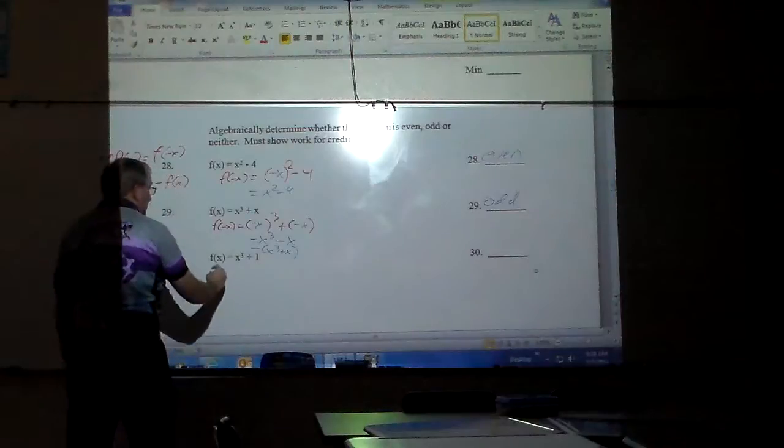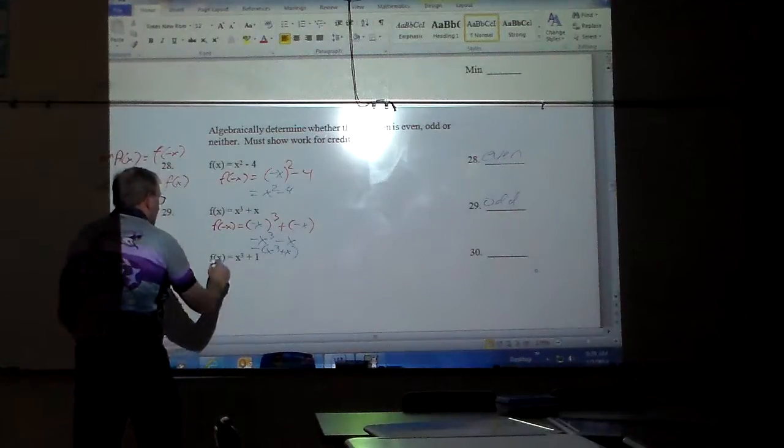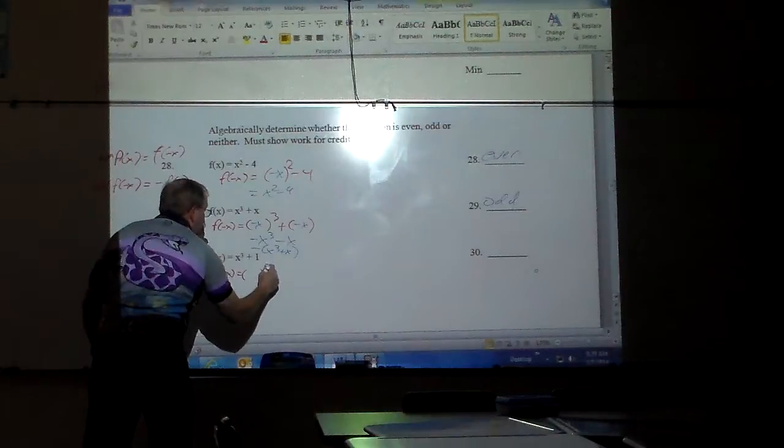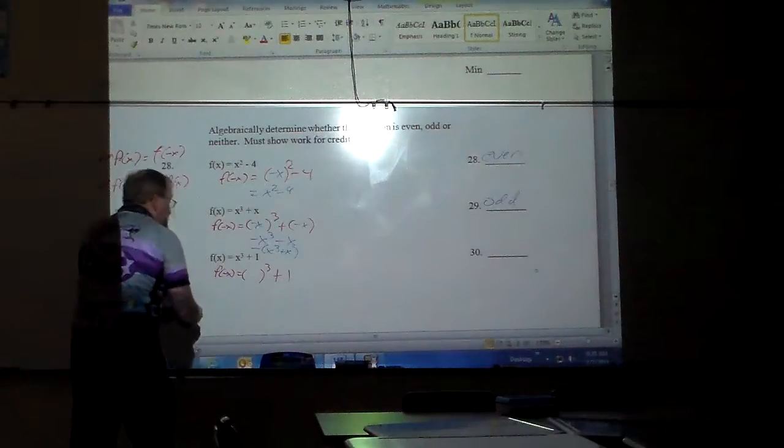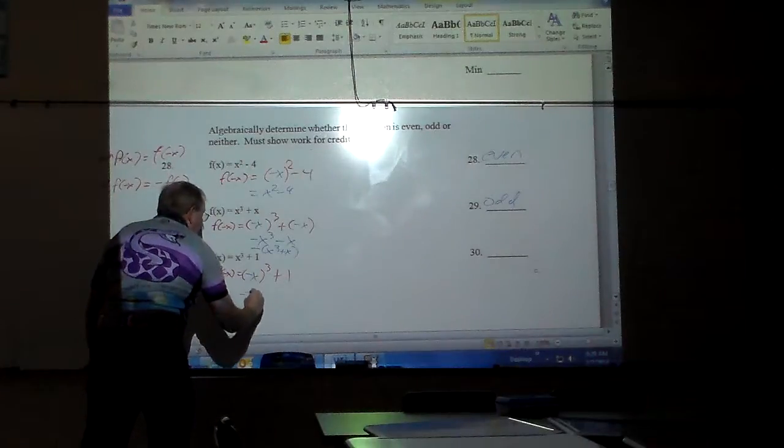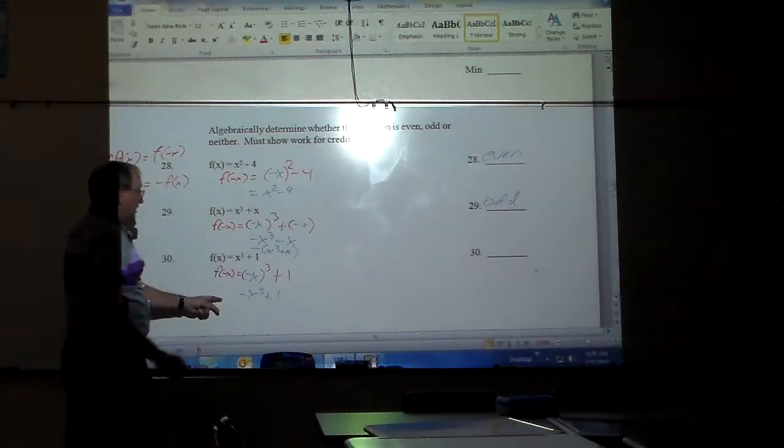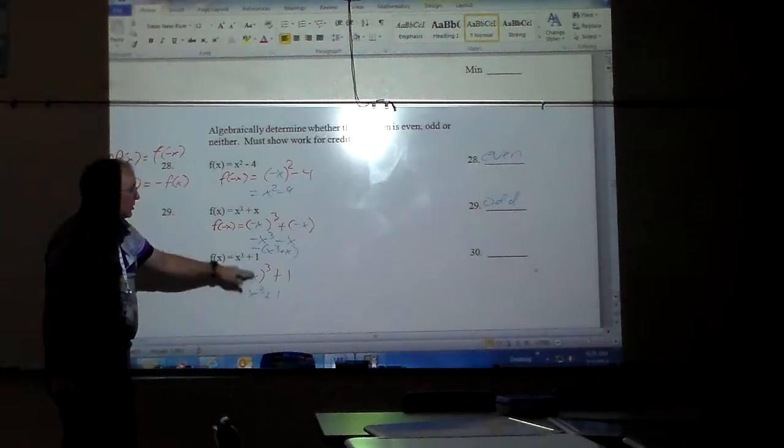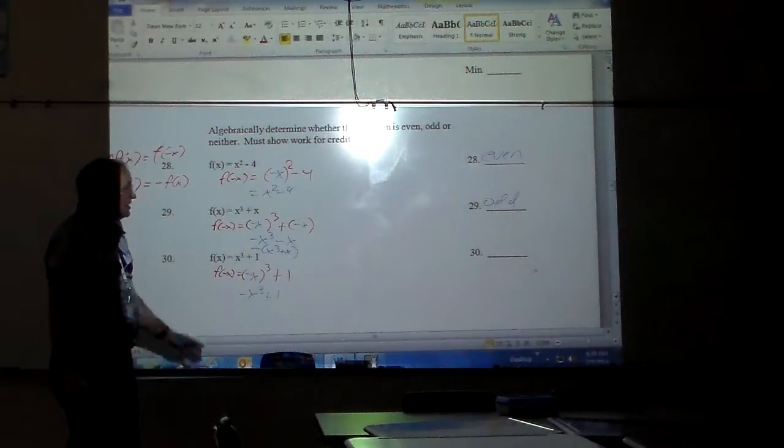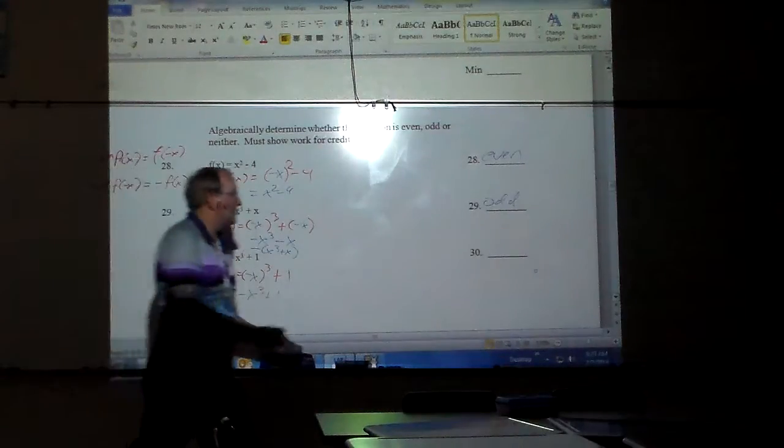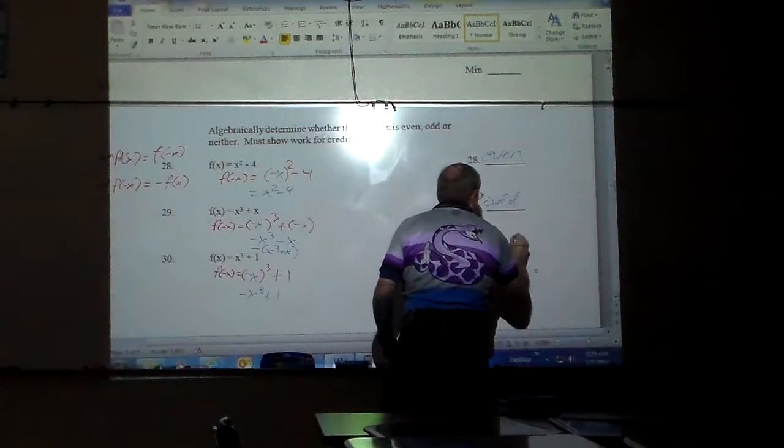And then let's test this last one here. I'm going to put in the f of negative x for the original equation. This one is x cubed plus one, and I'm going to put a negative x in. Well, that's going to give me negative x cubed plus one. Now, notice, this one changed signs, but that one did not. So in order for it to be odd, they both have to change. To be even, none of them can change. One changed and one didn't, so that makes this one a neither.